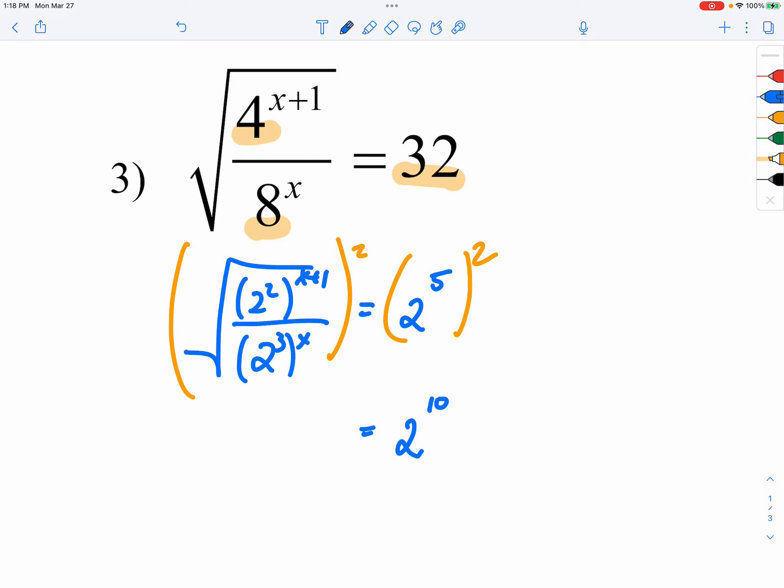On the left, I know my rules, so the numerator becomes 2 to the 2x plus 2 power. The denominator would be 2 to the 3x power. And then we can combine the exponents together.